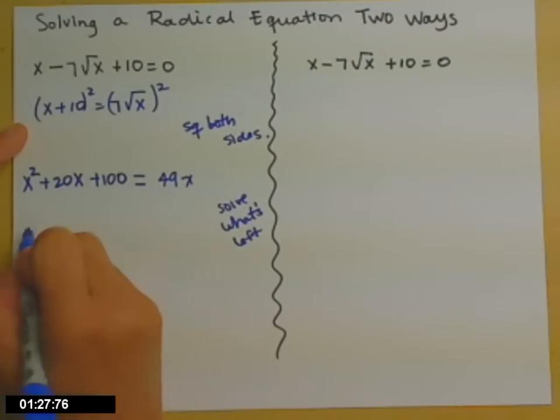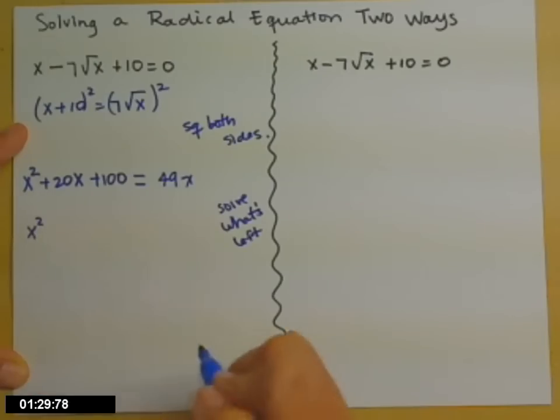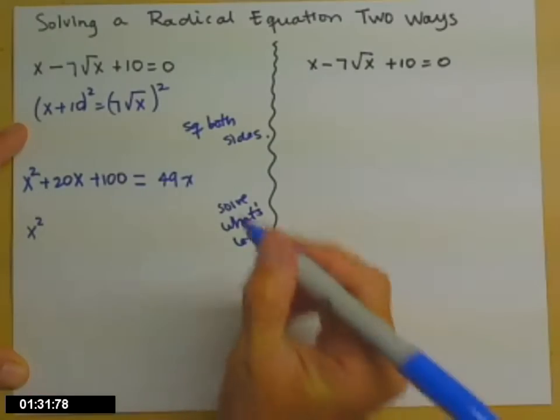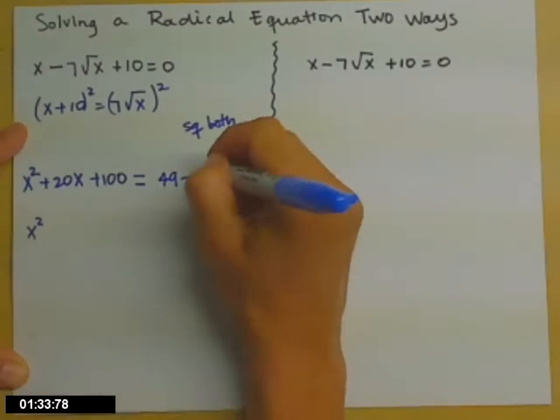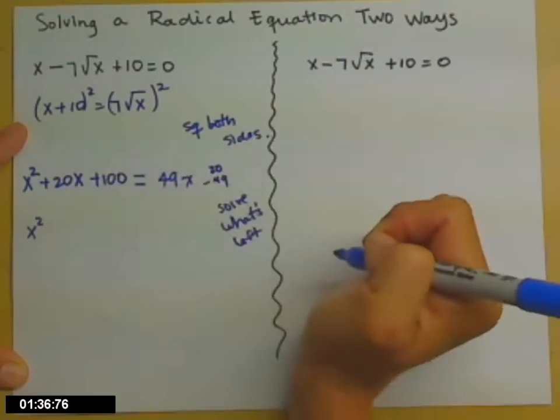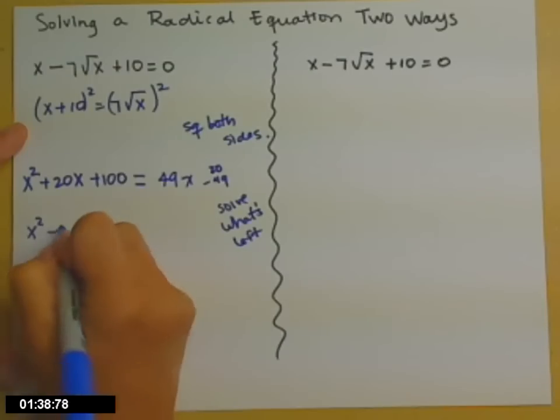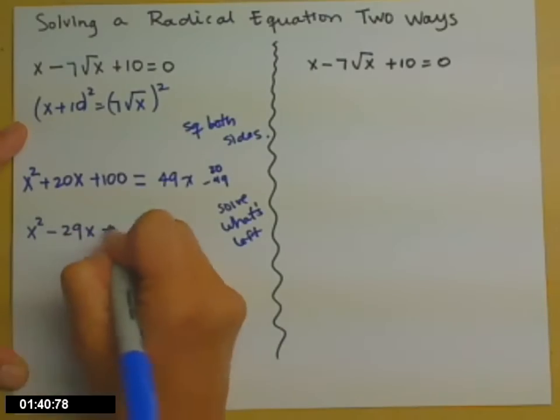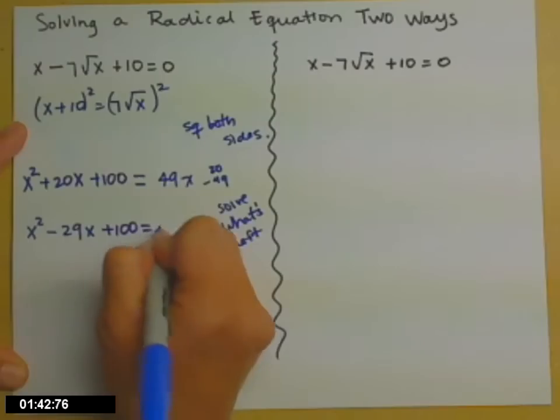So subtract 49x from both sides to get a 0. So 20 minus 49 will be 29, so minus 29x plus 100 equals 0.